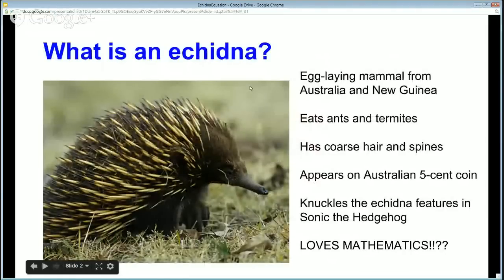Now echidnas are egg laying mammals that live in Australia and New Zealand. They eat ants and termites and as you can see from the picture they have coarse hair and spines a bit like a spiny anteater.